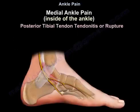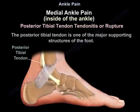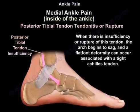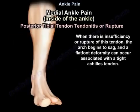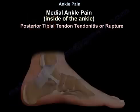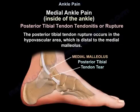Posterior tibial tendonitis or rupture can occur from overuse activities, degeneration, or trauma. The posterior tibial tendon is one of the major supporting structures of the foot, helping to keep the arch in its normal position. When there is insufficiency or rupture of this tendon, the arch begins to sag and a flat foot deformity can occur, associated with a tight Achilles tendon. Rupture typically occurs in the hypovascular area distal to the medial malleolus.